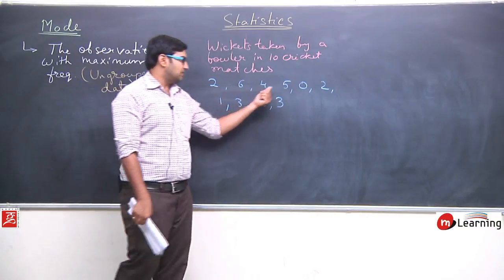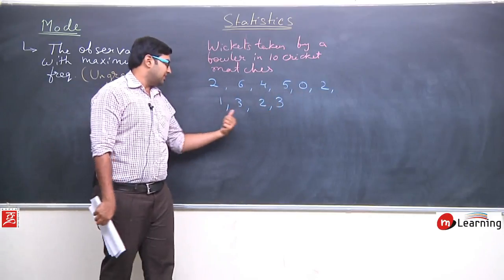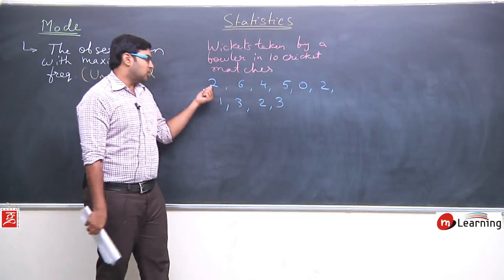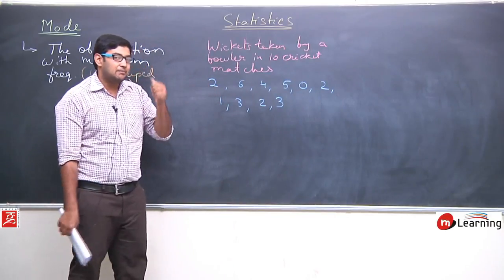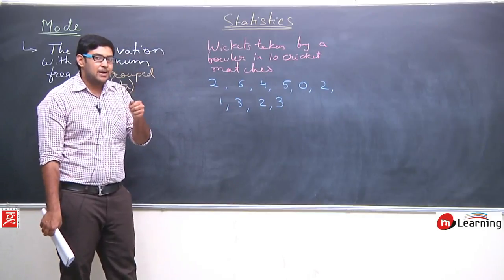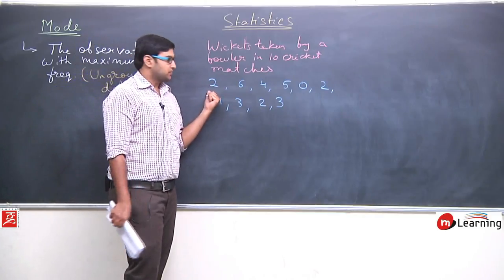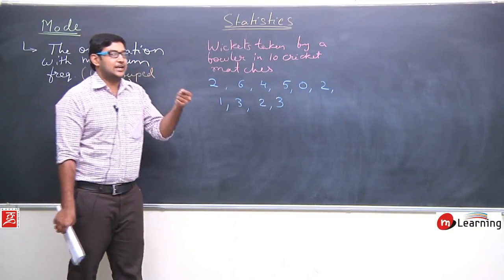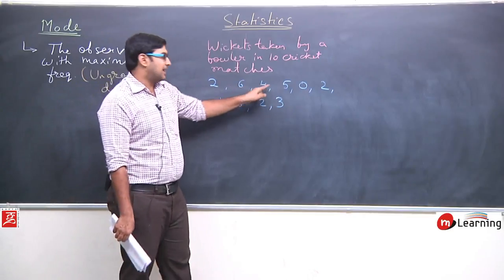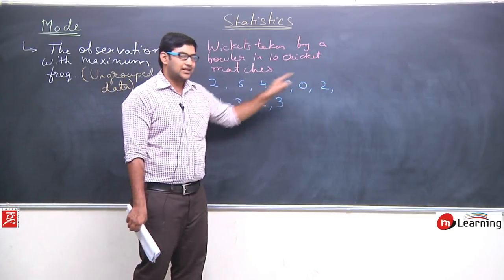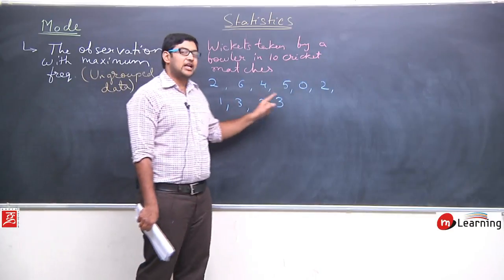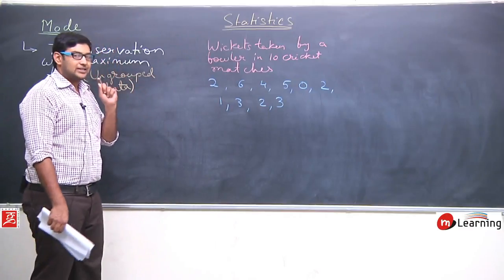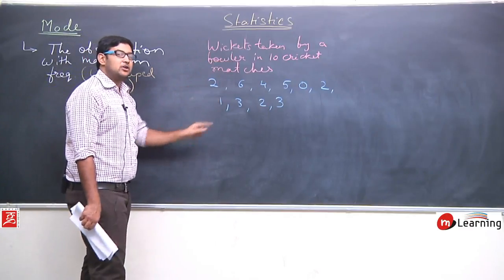You can see there are 10 numbers written on the board. This 2 represents the number of wickets taken by that bowler in the first match; 6 represents the second match; and so on for the third, fourth, fifth, sixth, seventh, eighth, ninth, and tenth match. So the data — the number of wickets taken by this bowler in 10 cricket matches — is given to us.